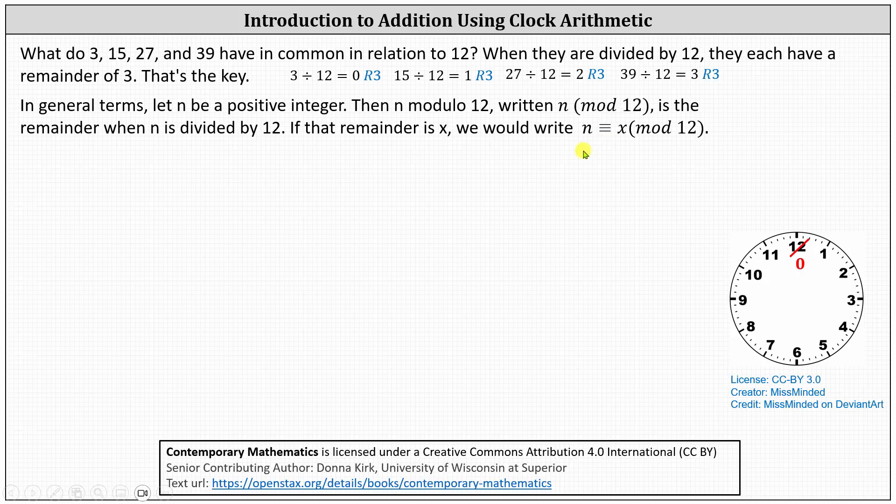These three horizontal segments that resemble an equal sign represent congruence. Let's look at two examples. First, we have 17 mod 12. 17 mod 12 is equal to the remainder when 17 is divided by 12. 17 divided by 12 equals 1 with a remainder of 5. Because the remainder is 5, we now know 17 mod 12 equals 5.